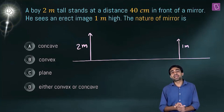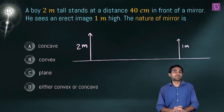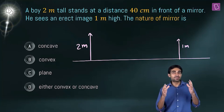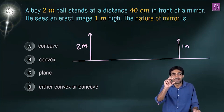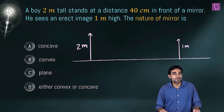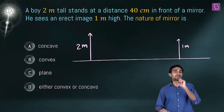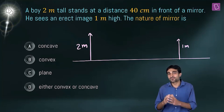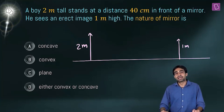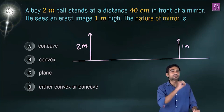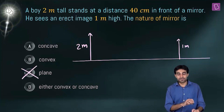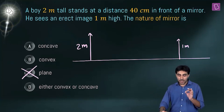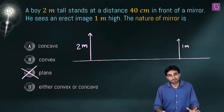Can this be done using a plane mirror? In a plane mirror, magnification is always one, meaning the height of the image equals the height of the object. But here the image is smaller than the object, so this cannot happen with a plane mirror. Plane mirrors are rejected.